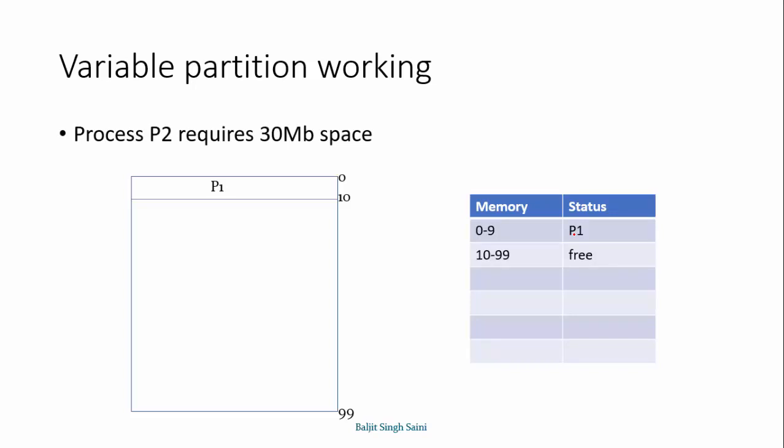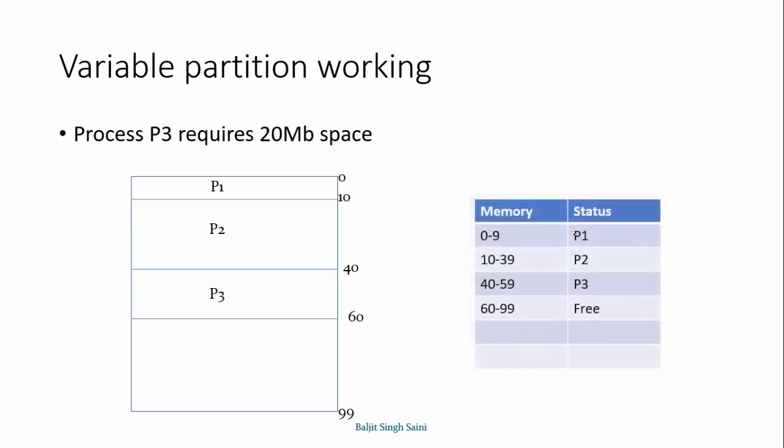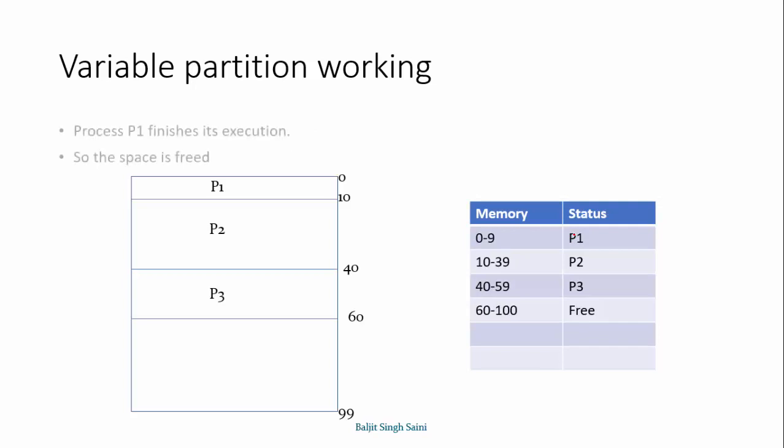P2 process arrives, it requires 30 MB space. 30 MB will be allocated to P2, and the memory table is updated. 10 to 39 are now with process P2. Then process P3 arrives, which requires 20 MB of space. 20 MB is allocated and we update the table.